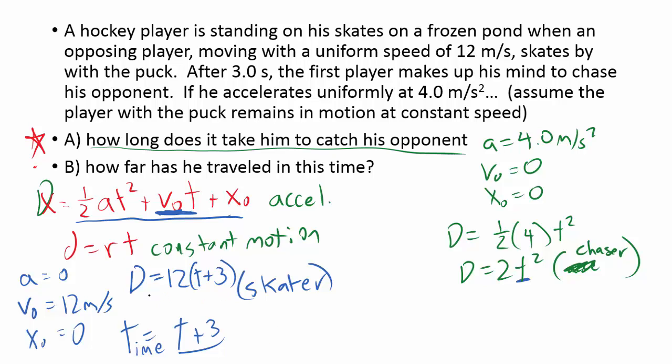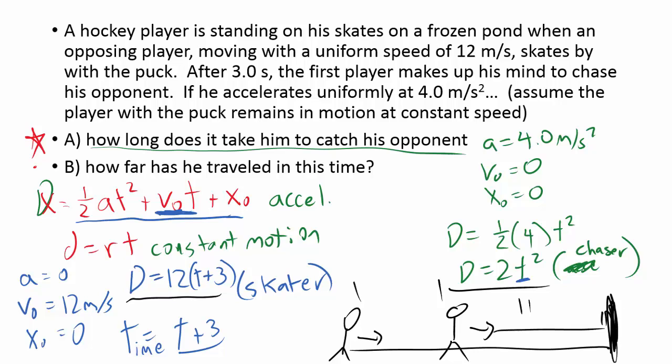Now, what we have here is that when the distance, if you can imagine that these two people, as this person chases the other person, at one point they might be this far apart, at another point they might be this far apart. When their distances are equal, so when the d's are the same, that's going to be when this person has traveled the same distance as this person. They're going to be at the same spot, and he's caught the other person. So what I want to do is set these two d's, or these two equations, equal to each other.